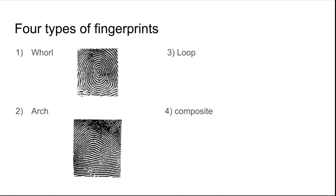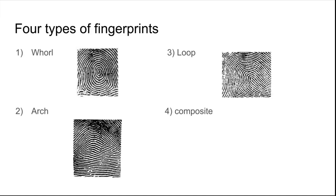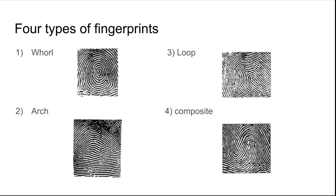A loop, where it starts on one side, loops around, and exits on the same side it started, but does not complete a circle. A composite, or a mix or combination of the three above.